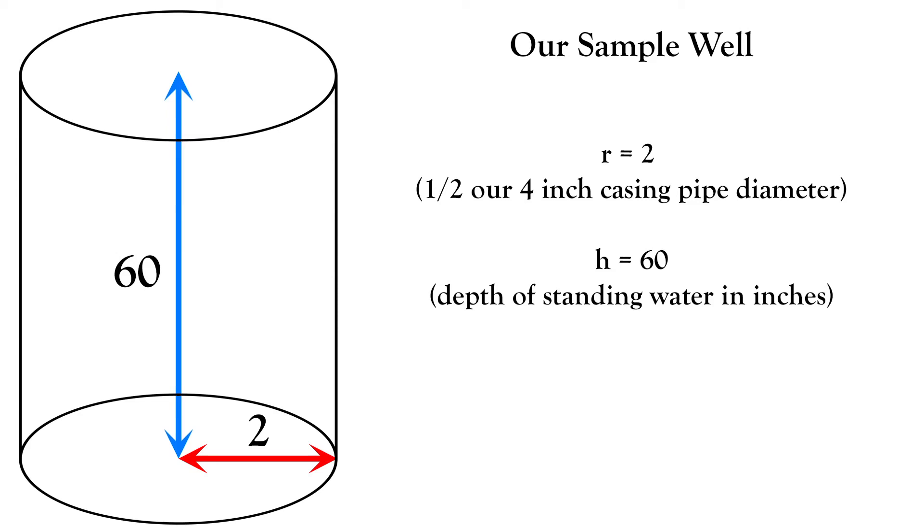Okay, back to our sample well. Half of our four inch casing pipe is two and that will be represented by r. And the h is represented by our 60. That's the depth of water in inches.